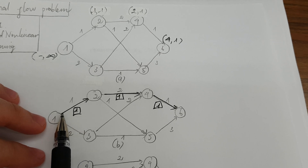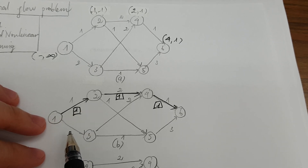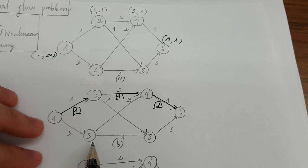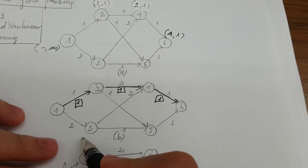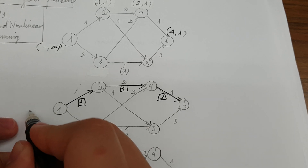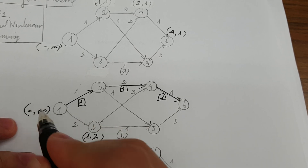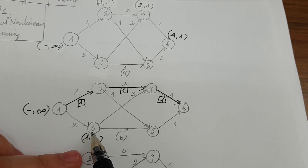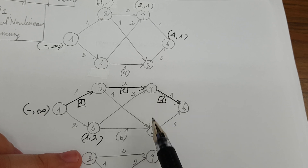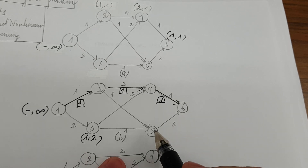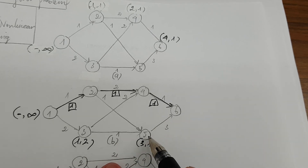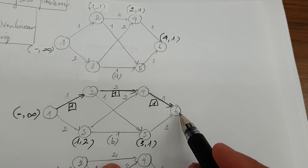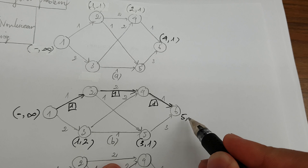We already used all capacity on the first connection, so we scan another path to node 3. We label node 3 as (1, 2). From node 3 we scan and see there are two nodes: node 4 and node 5. We can label node 5 as (3, 1), for example.